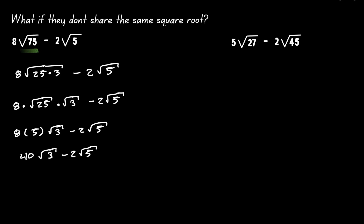This is as far as we can go. We cannot write 3 as a multiple of a perfect square, and we cannot write 5 as a multiple of a perfect square. After this simplification, notice that we were not able to match the inside of the square root. Therefore, we cannot combine this expression — we can just keep it as it is.